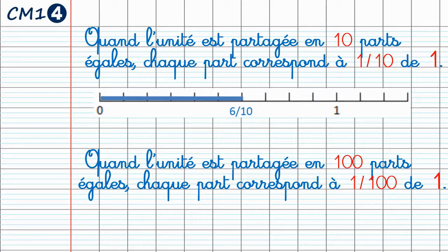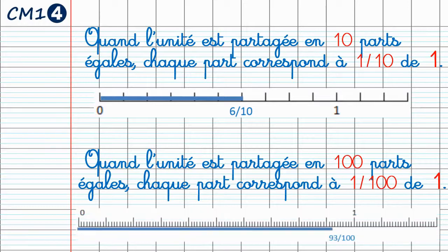Quand l'unité est partagée en 100 parts égales, chaque part correspond à 1 centième de l'unité. Comme sur la droite graduée ici dessous, l'espace entre le 0 et le 1 est divisé en 100 parts égales. Et la partie représentée dans l'exemple en bleu correspond à 93 centièmes.